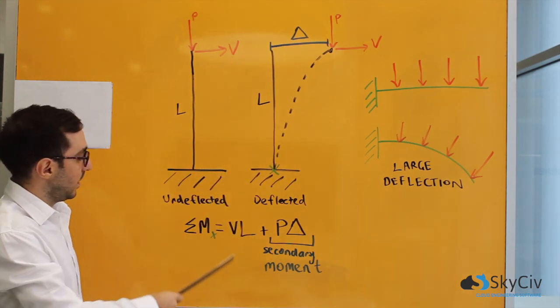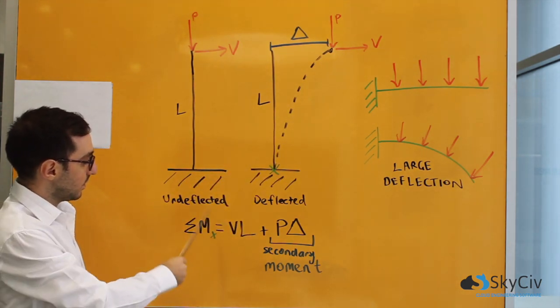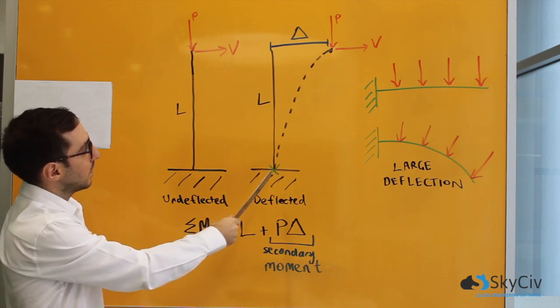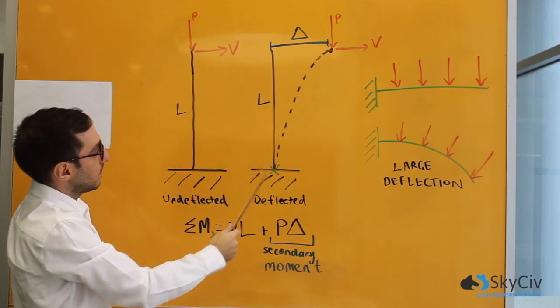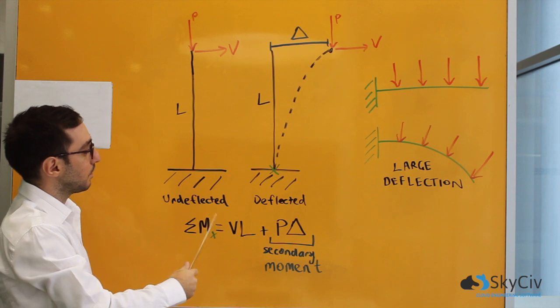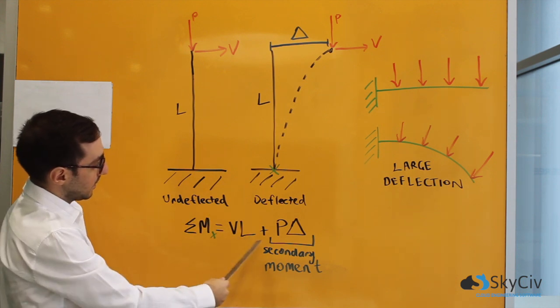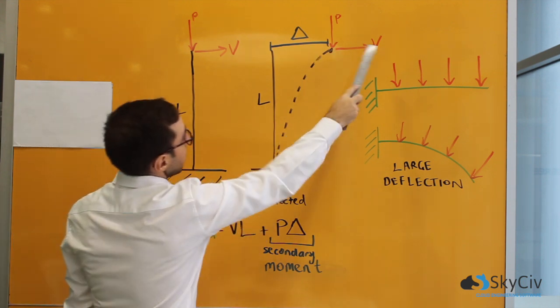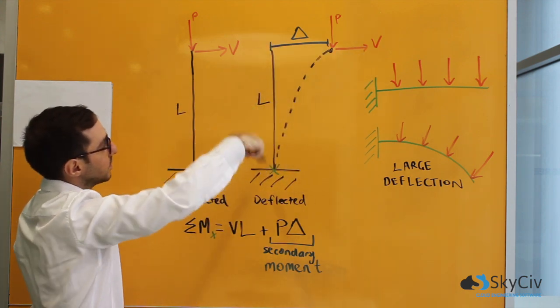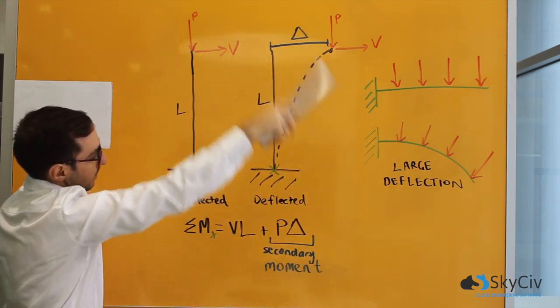Now if we take the sum of moments about the base of the column, we can calculate that moment. This term on the left is V times L. So V being here and the distance being L. That's the moment about the base.